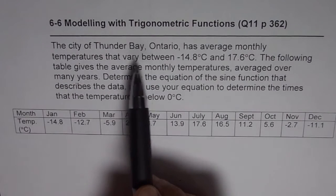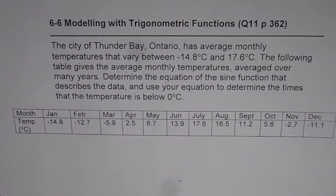So the question here is, the city of Thunder Bay, Ontario has average monthly temperatures that vary between minus 14.8 degrees centigrade and 17.6 degrees centigrade. The following table gives the average monthly temperatures averaged over many years. Determine the equation of the sine function that describes the data and use your equation to determine the times that the temperature is below 0 degrees centigrade.